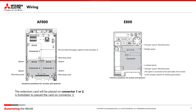The FR-A8AP encoder board can be mounted on the AF-800 inverter or on the A800 inverter. If an AF-800 inverter is used, the encoder board must be mounted in connectors 1 or 2. It is forbidden to mount it in connector 3.